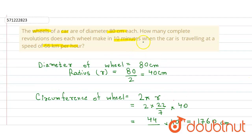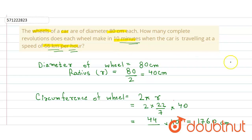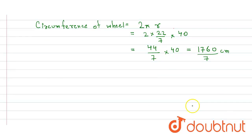Now we have to find how many complete revolutions does each wheel make in 10 minutes. The speed given is equal to 66 kilometer per hour, so from here we can say that in one hour it covers 66 kilometers. We need to find how much distance it will cover in 10 minutes. First, we convert this speed into centimeter per minute. Speed of car is equal to 66 kilometer per hour.